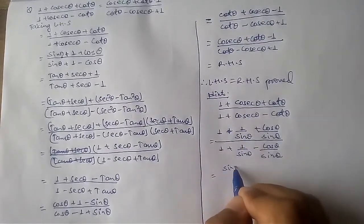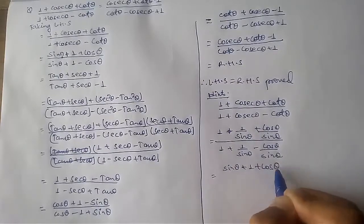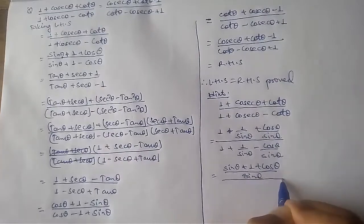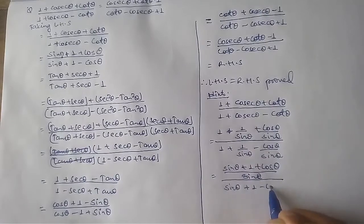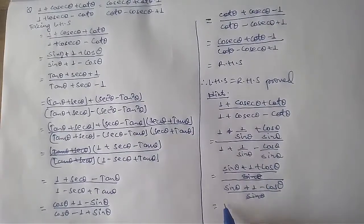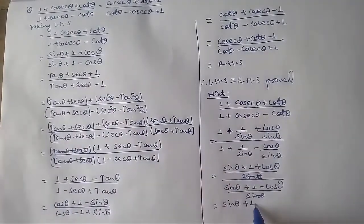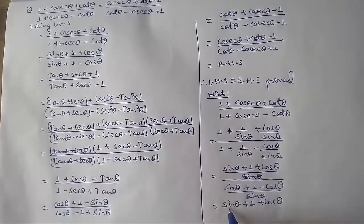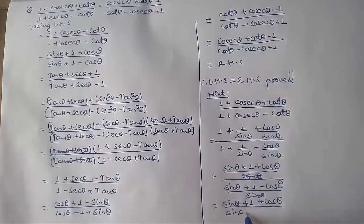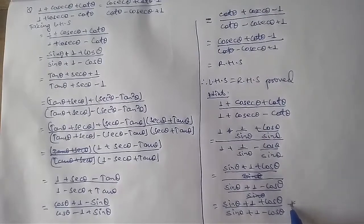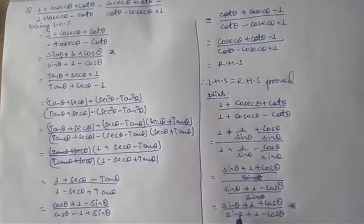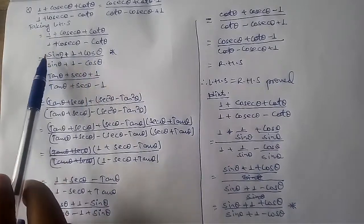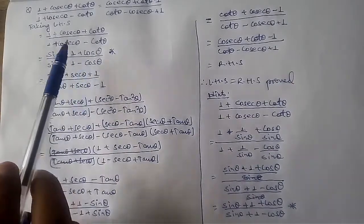The whole expression, 1 plus 1 over sin theta plus cos theta over sin theta in the numerator, and 1 plus 1 over sin theta minus cos theta over sin theta in the denominator — if you take the LCM, you get sin theta plus 1 plus cos theta divided by sin theta, over sin theta plus 1 minus cos theta divided by sin theta. This simplifies to sin theta plus 1 plus cos theta divided by sin theta plus 1 minus cos theta. I think this hint makes it easy to understand each transformation step.